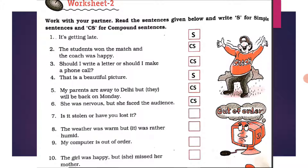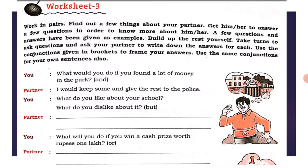'Is it stolen or have you lost it?' — 'or' is used, compound sentence with two independent clauses. 'The weather was warm but it was rather humid' — two separate independent clauses joined by 'but', compound sentence. 'My computer is out of order' — simple sentence, one subject, one predicate. 'The girl was happy but she missed her mother' — compound sentence.